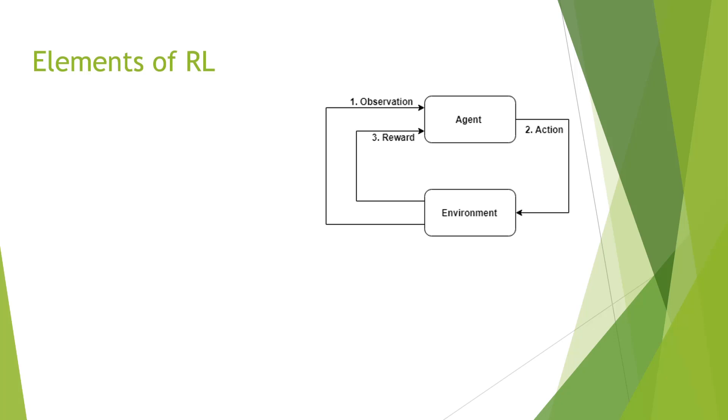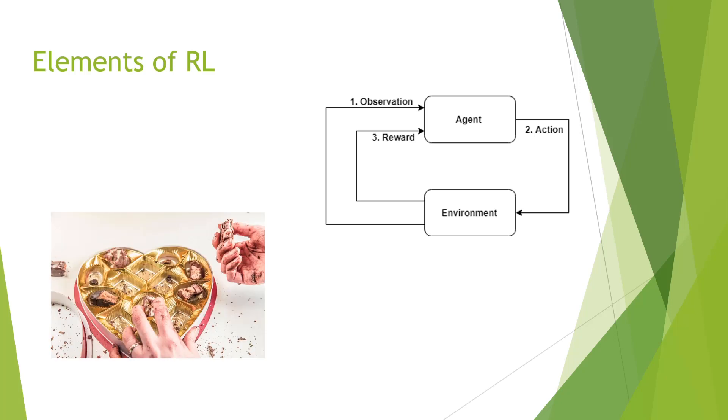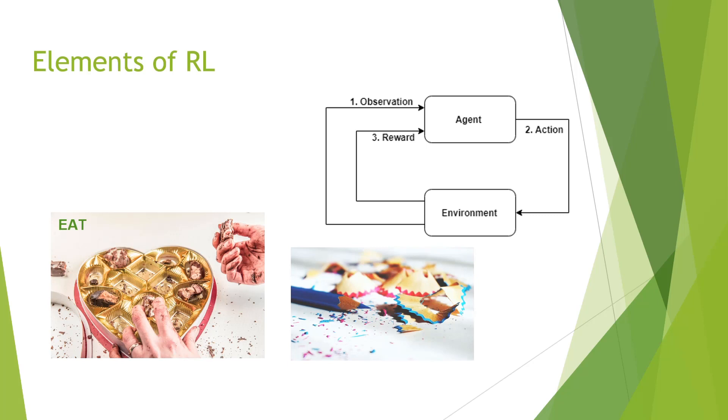You see a box of chocolate, eat it, and become happy. Here the environment is the box of chocolate. You observe the chocolate in the environment and take the action of eating it. The reward is the happiness that you get from it. If you observe, you will repeat this behavior whenever a box of chocolate is shown to you. Similarly, you don't eat the crayon because you tried it in your childhood and the reward was a bad taste.